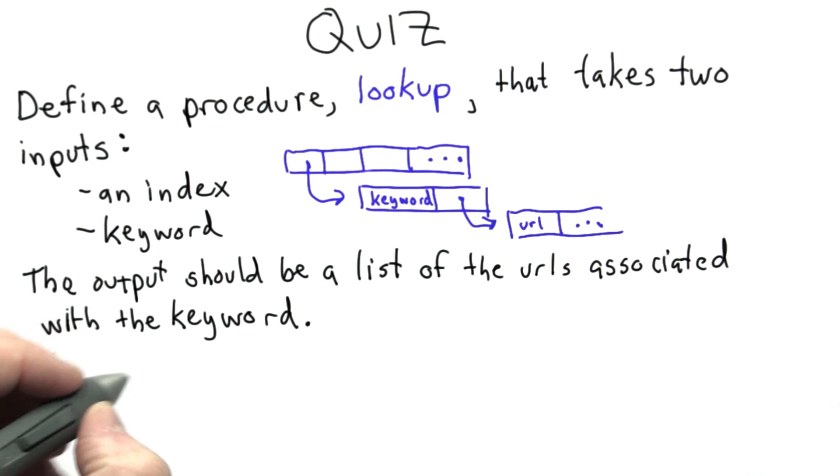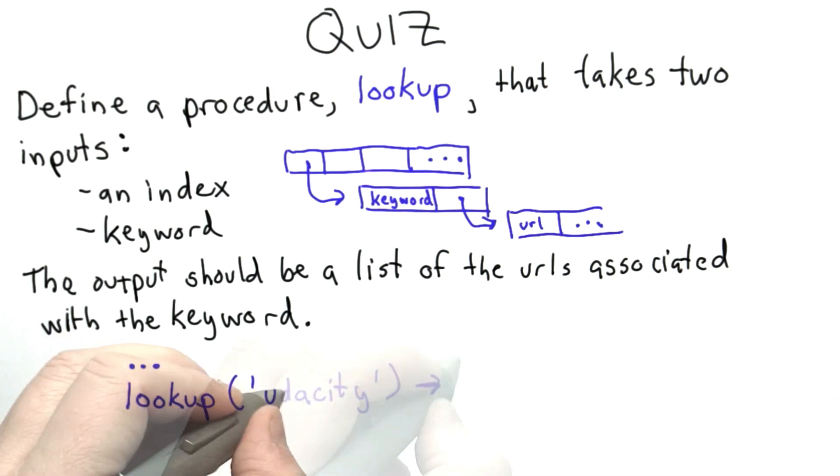As an example, we constructed the index here where we added two URLs with the keyword Udacity. The result from doing a lookup on the keyword Udacity should be a list containing those two URLs.